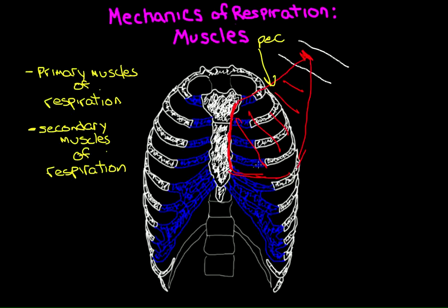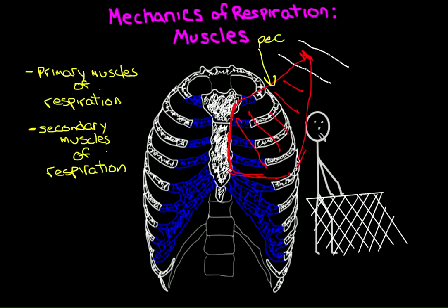You probably subconsciously know all about this. Suppose you go and run 400 meters — you're exhausted, panting, doubled over in pain, grabbing onto a bench or a fence. What you're doing is fixing your upper limbs subconsciously, thereby fixing the attachments of muscles like pec major which are normally attached to the upper limb. This allows the other end of the muscle to move, allowing pec major to pull on the thoracic cage to expand the volume of the cage.